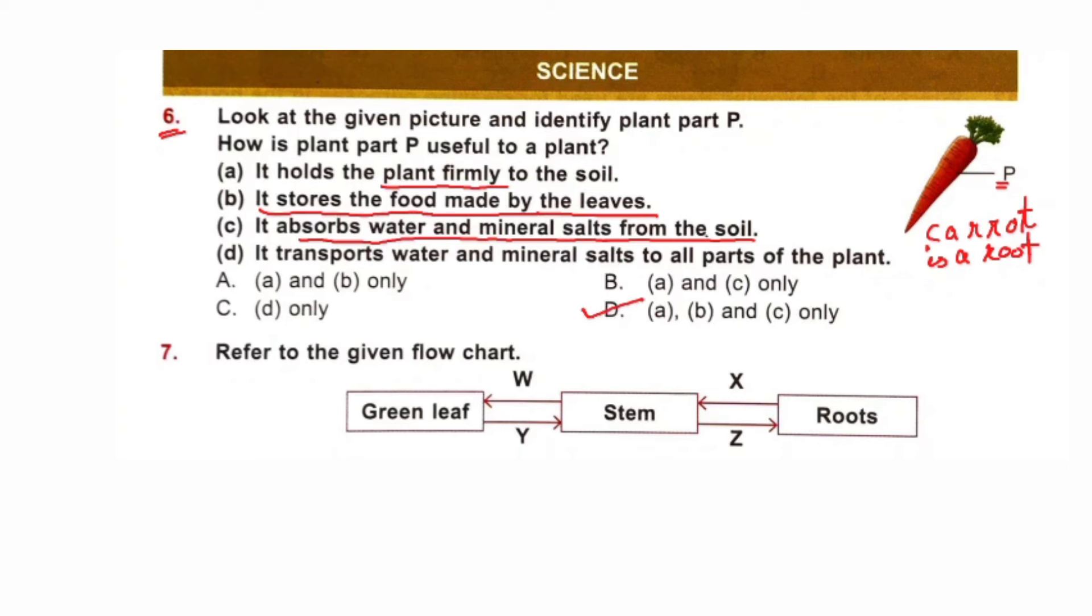A, B and C are correct. A: It holds the plant firmly to the soil. It is the function of root. B: It stores the food made by the leaves. This activity is done by different parts of the plant depending on the plant. Option C: It absorbs water and mineral salts from the soil. Option D: It transfers water and mineral salts to all parts of the plant.